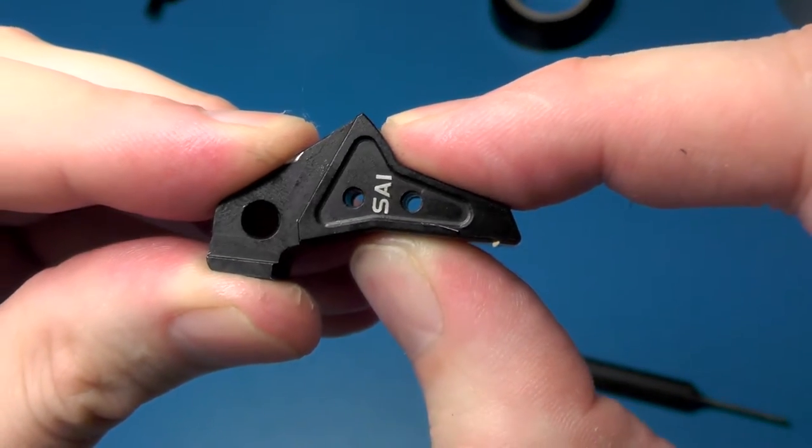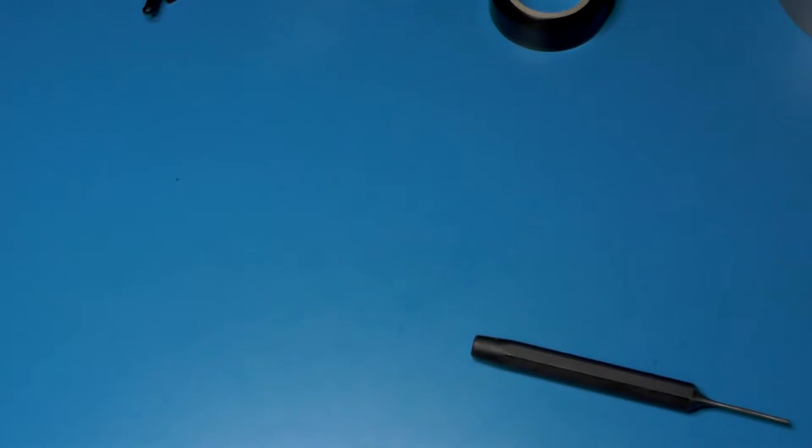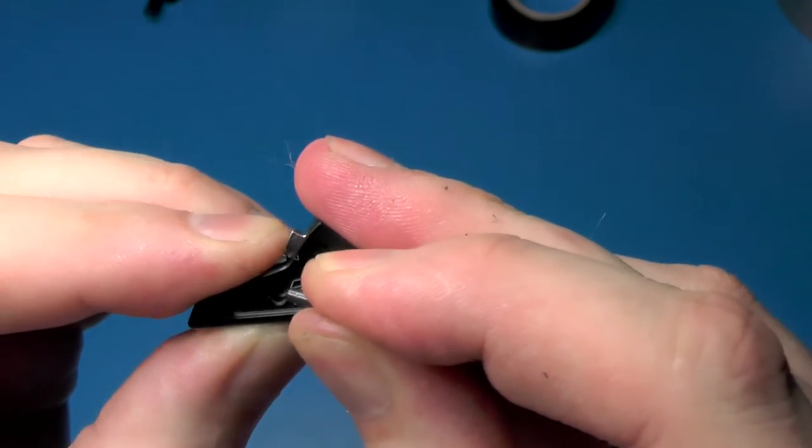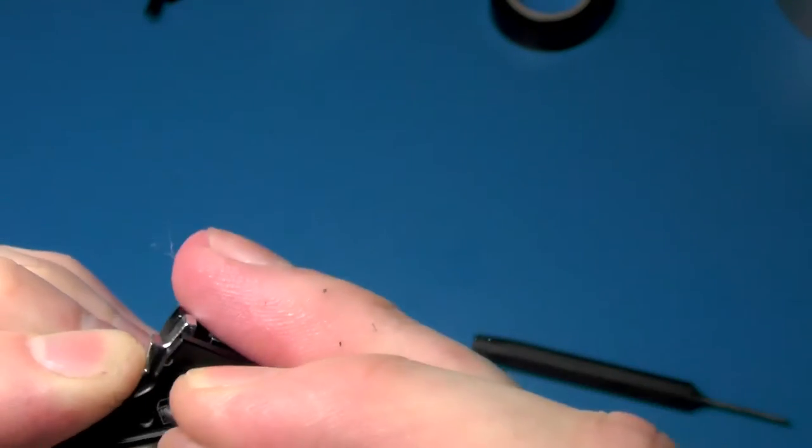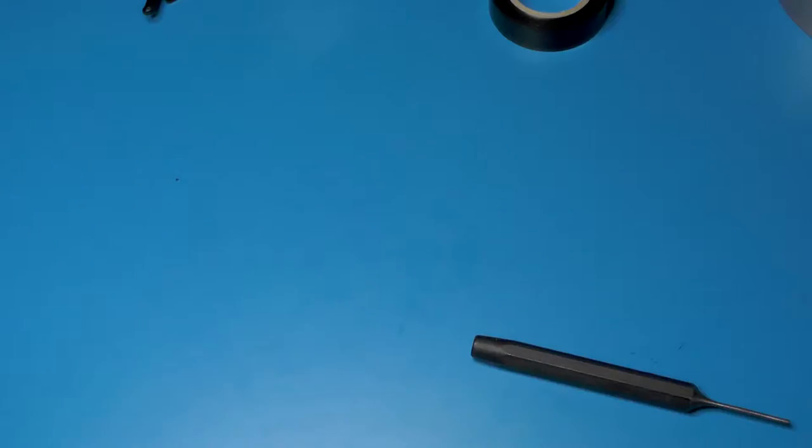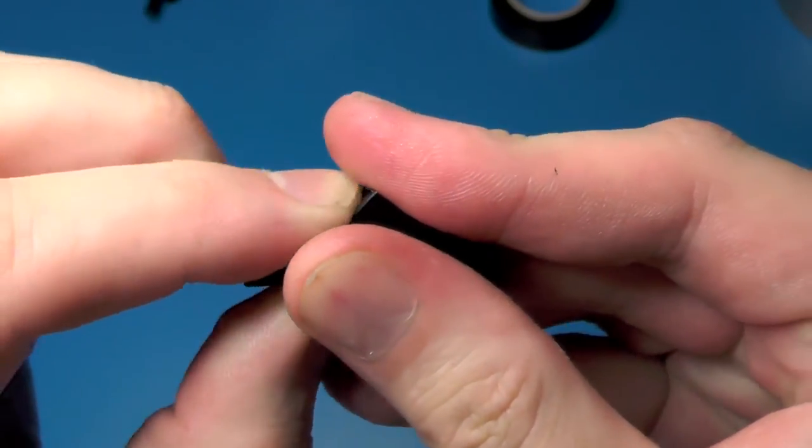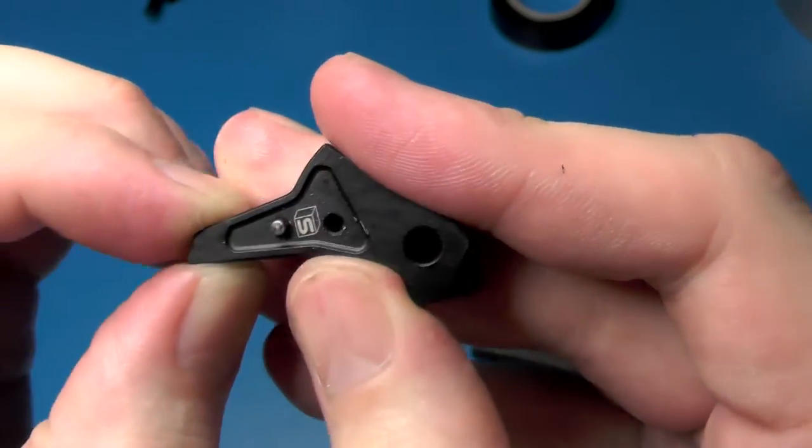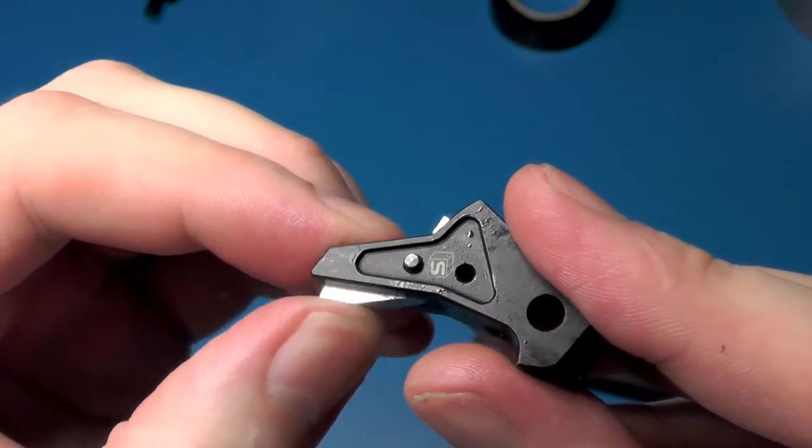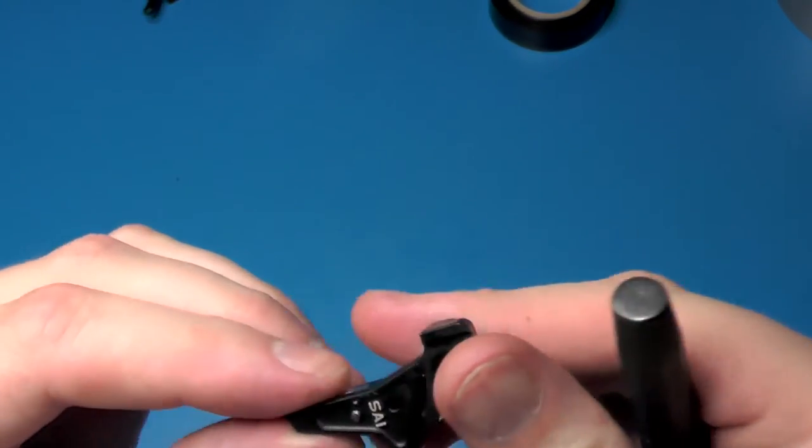And you should be able to see that the holes line up. And we're going to want to take our pin and put it into the bottom hole while trying to keep the safety in place. At this point you might have to wiggle it around a little bit, but it should slide in like this. And just finish it off by pushing the pin in all the way.